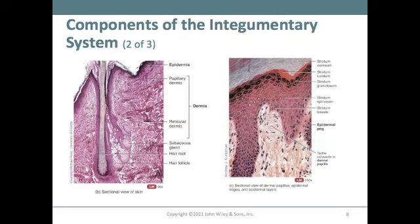Looking at micrographs of the skin, we can see the epidermis and dermis labeled, along with the root and follicle of the hair located within the dermis and a sebaceous gland. One micrograph is 60 times magnified and another is 250 times magnified, giving a closer look at the different skin layers.